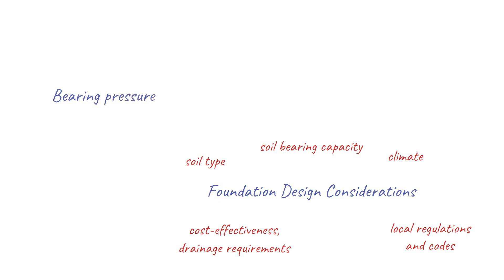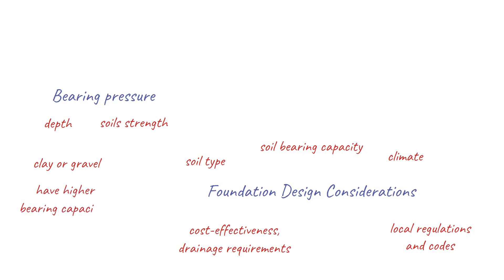Bearing pressure: Without proper bearing pressure, the soil may not be able to adequately carry the burden and could cause serious damage to the foundation and any structures built upon it. The bearing pressure of a foundation depends on two factors — its depth and soil strength. A deeper foundation will generally have better bearing capacity than a shallow one, as deeper soils are less affected by weathering or environmental conditions that may weaken them over time. Stronger soils such as clay or gravel tend to have higher bearing capacities than softer soils such as sand. The bearing capacity of a soil is the pressure which it can sustain; it is important that bearing pressure is less than the bearing capacity of the soil, otherwise the building will fail — as illustrated by the Leaning Tower of Pisa.